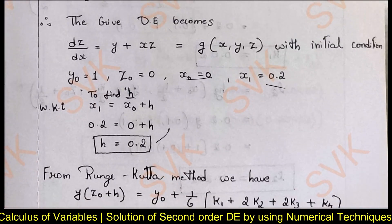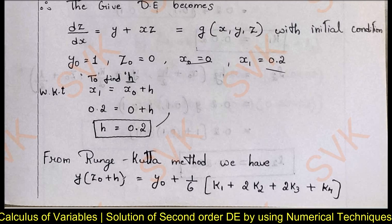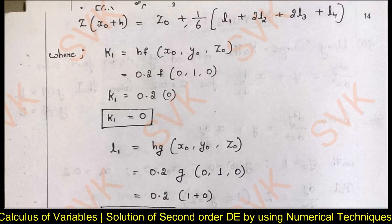Now applying the Runge-Kutta method, we have y(x₀ + h) = y₀ + (1/6)(k₁ + 2k₂ + 2k₃ + k₄). Let us find k₁, k₂, k₃, k₄. Also, z(x₀ + h) = z₀ + (1/6)(l₁ + 2l₂ + 2l₃ + l₄), so we should also find l₁, l₂, l₃, l₄.